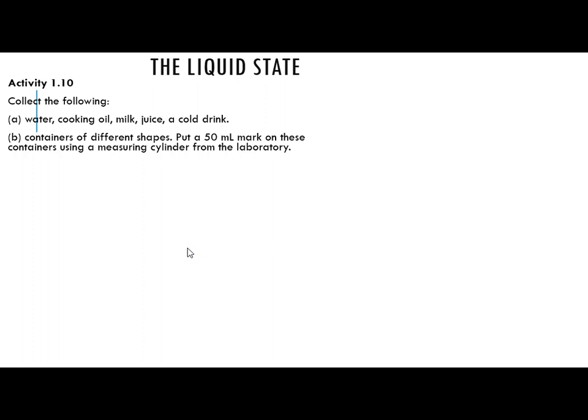So collect the following: water, cooking oil, milk, juice and cold drink. Then containers of different shapes — put a 50 ml mark on these containers using a measuring cylinder from the laboratory. You have to collect different shapes of containers which are having different shapes.